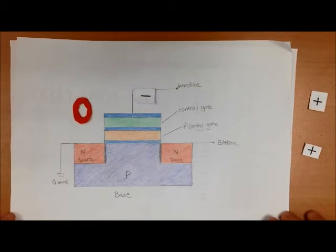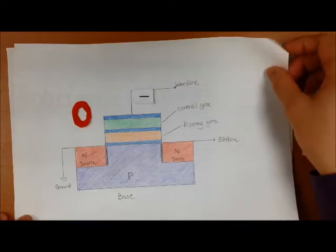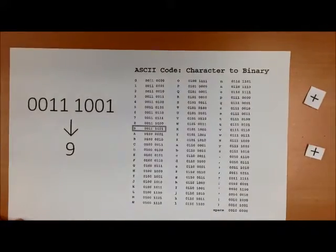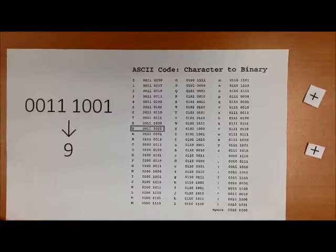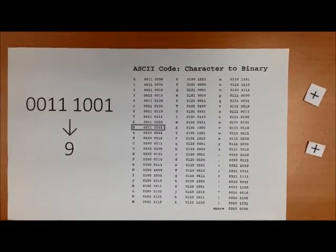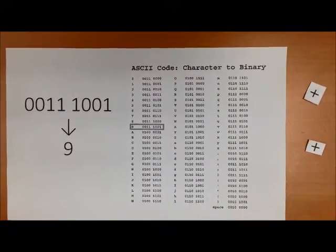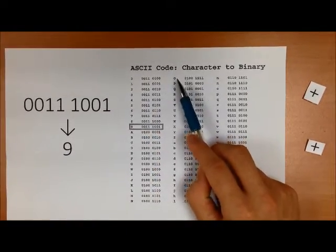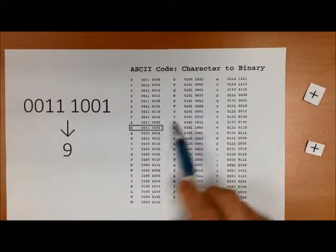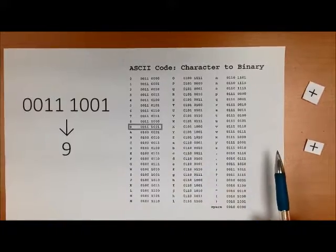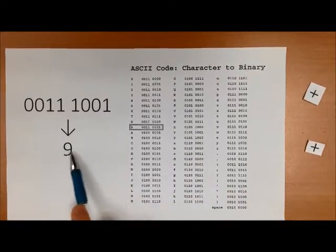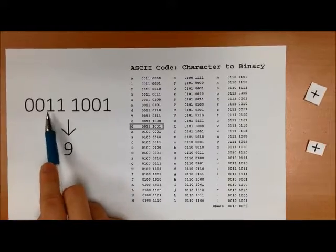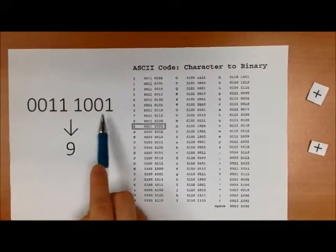The ones and zeros form a bit, and when many floating gate transistors are connected together, there will be a string of binary numbers — ones and zeros — such that they can become useful data. For example, according to the ASCII code, a character will require 8 bits of data, and the character '9' will have the data 00111001.